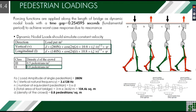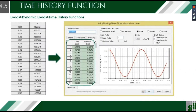The load amplitude of a single pedestrian is 280 N, the vertical natural frequency is 3.61 Hz, and the number of equivalent pedestrians is S multiplied by D, where S is the total area of the footbridge at 104.46 square meters and the density of the crowd is 0.8 pedestrians per square meter. To perform dynamic analysis, a mathematical model of pedestrian dynamic forces is needed. It is important to model mathematically the dynamic forces due to a single pedestrian or a crowd of people traversing the structure.